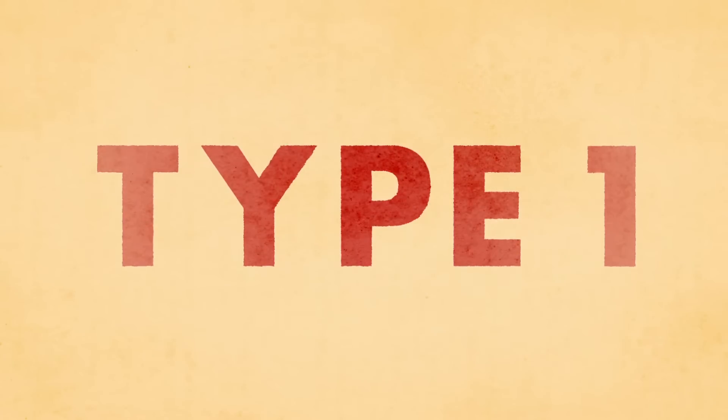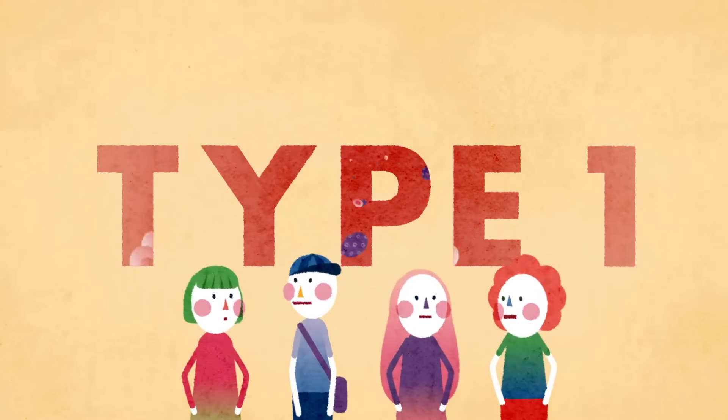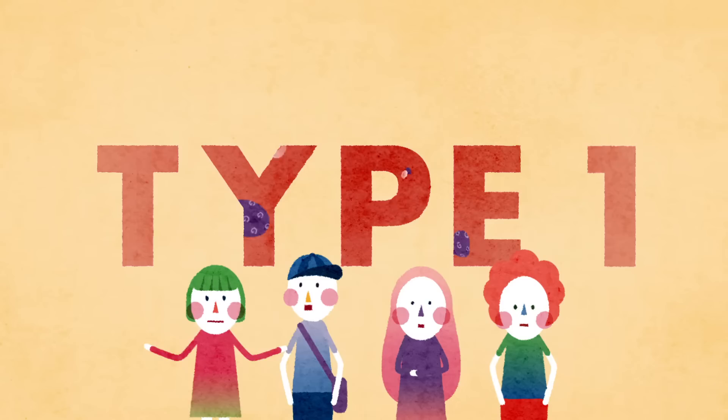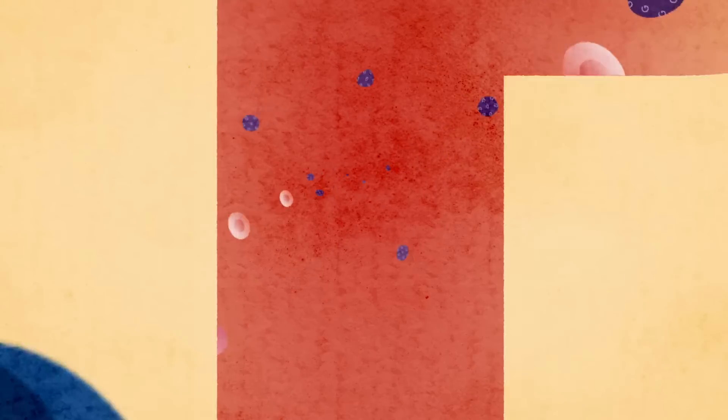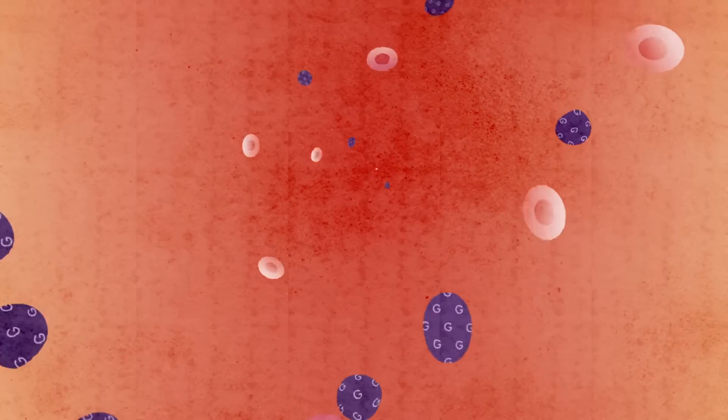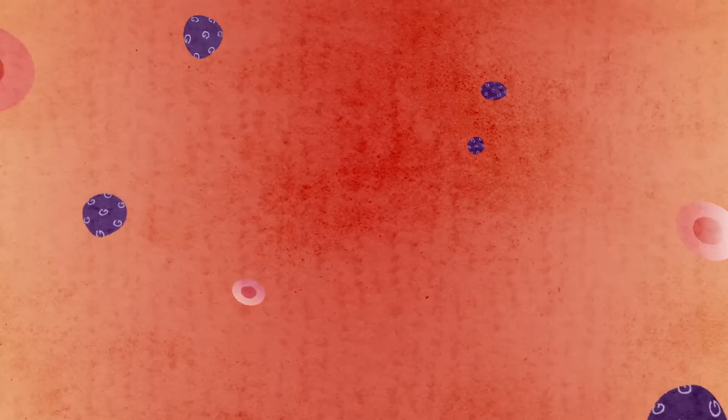What is type 1 diabetes? Type 1 diabetes is a very common illness amongst children. We don't know why it happens, but it is important to understand what it is and what you need to do to remain happy and healthy.